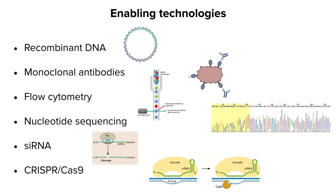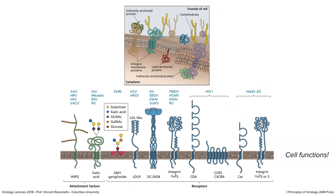The enabling technologies that have propelled this field include recombinant DNA, so you can clone receptor genes and put them in cells; monoclonal antibodies, developed in 1976; flow cytometry, the ability to purify single cells based on what's expressed on their surfaces using specific antibodies; nucleotide sequencing; and siRNA and CRISPR-Cas9. Now we have receptors for many, many viruses. As soon as a new virus is identified, within a year you have not only the cryo-EM structure but can identify the receptor as well.